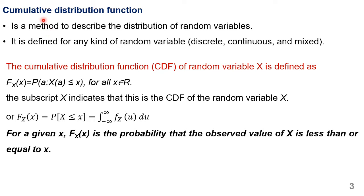In short, it is called CDF. It is defined for any kind of random variable — discrete, continuous, or mixed. The CDF of a random variable X is defined as F_X(x) = P(X ≤ x) for all x belonging to R.